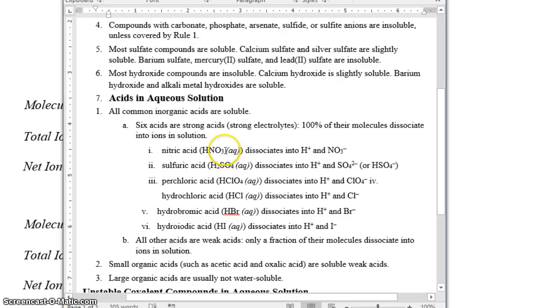These are the ones you're supposed to memorize, so let's get going on that. We have nitric acid, sulfuric acid, perchloric acid, hydrochloric acid, hydrobromic acid, and hydroiodic acid. Notice that carbonic acid is not on that list. So it is a weak acid.